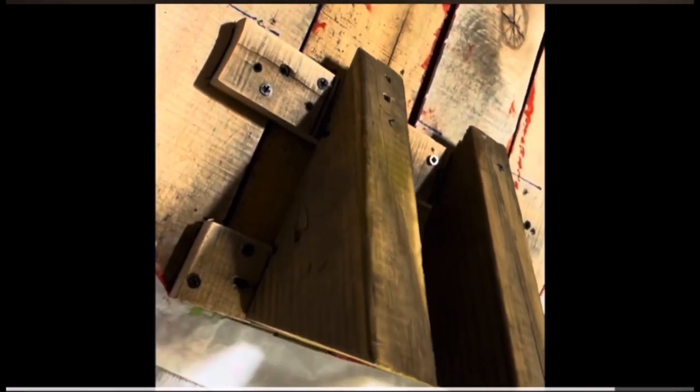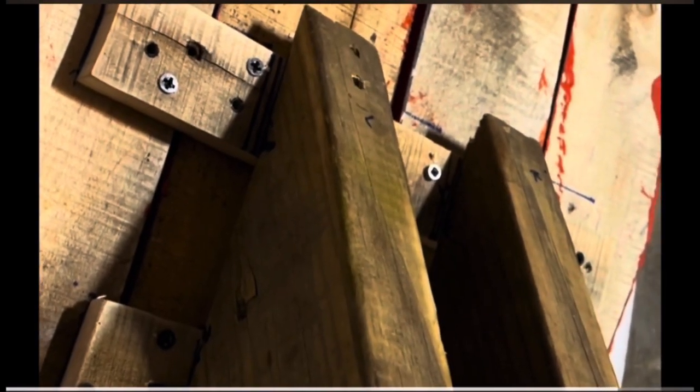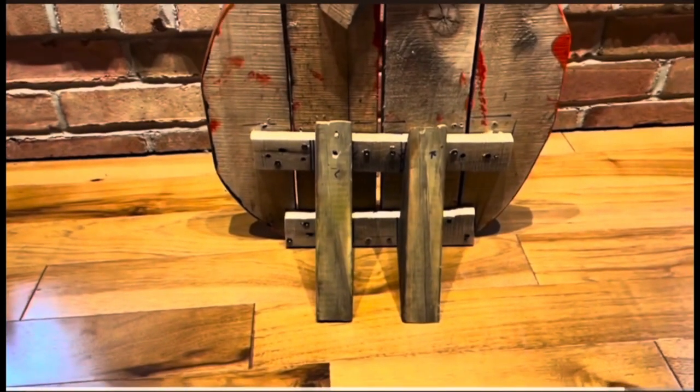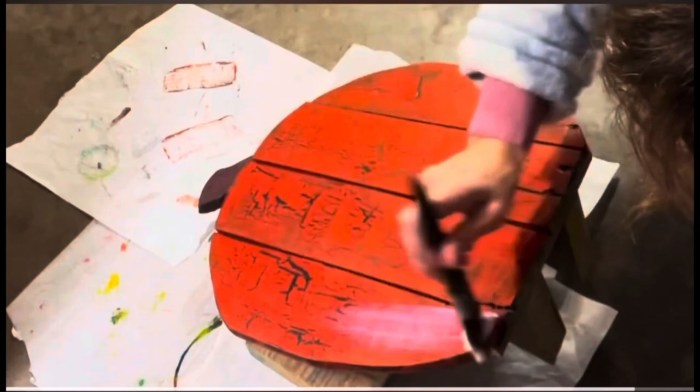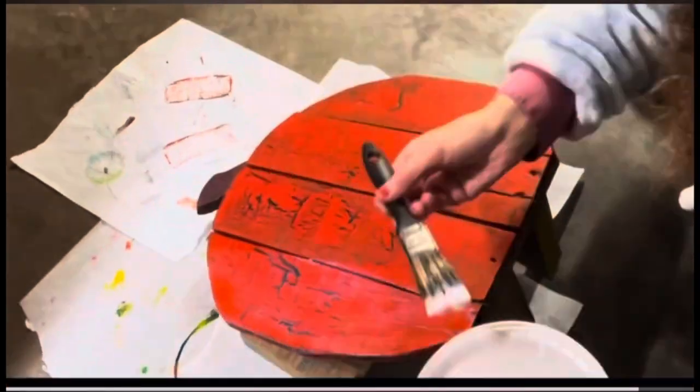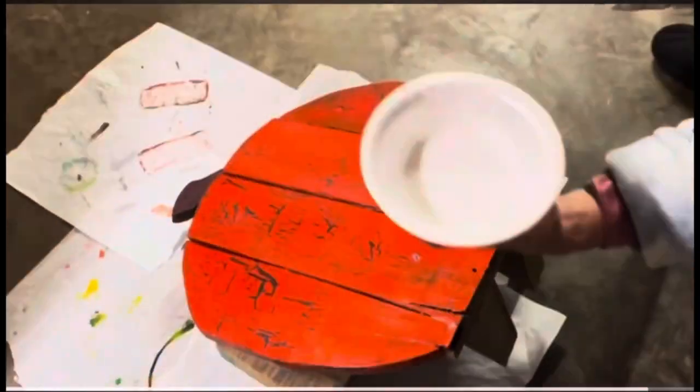We adhered the scrap wood stands. Here it is from the back side. Now to add a clear top coat to seal it. Putting a coat on the body of the pumpkin and a clear coat on the stem.